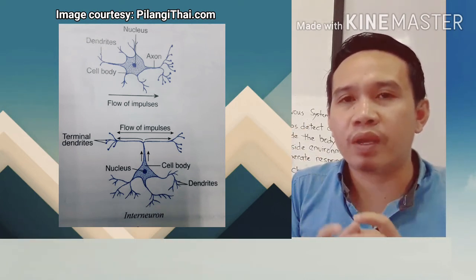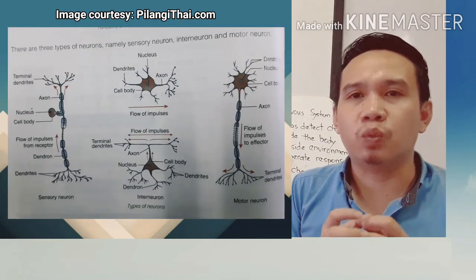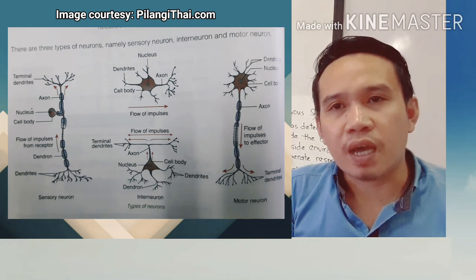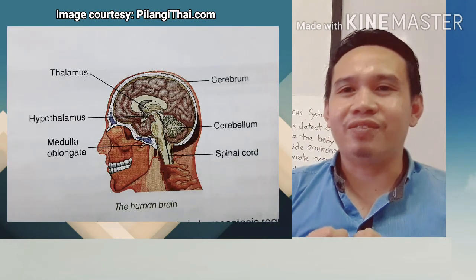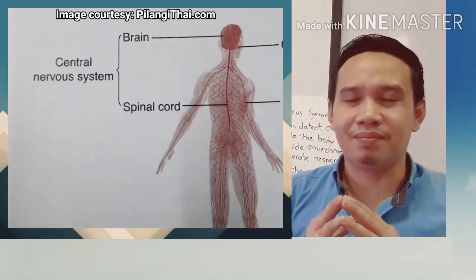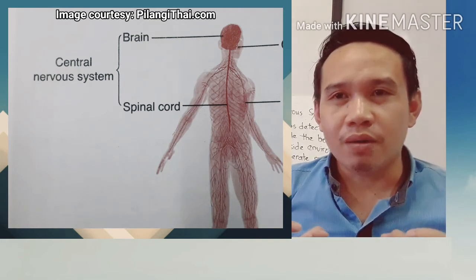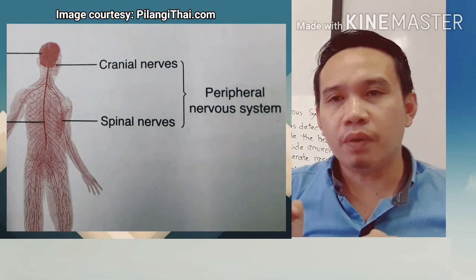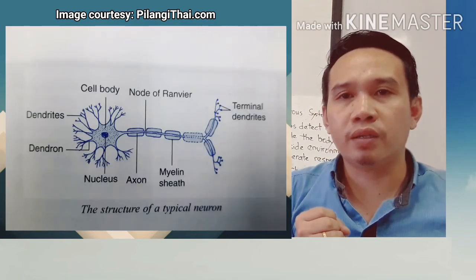That's the end of our topic for today about the different parts and functions of the human nervous system. I hope you learned something and were able to take notes about those important points. Thank you for listening and watching. Please don't forget to answer your quizzes and assignments on Google Classroom. Stay home, stay safe, and enjoy learning. See you in our next video!